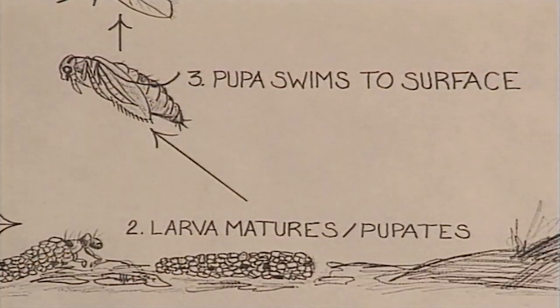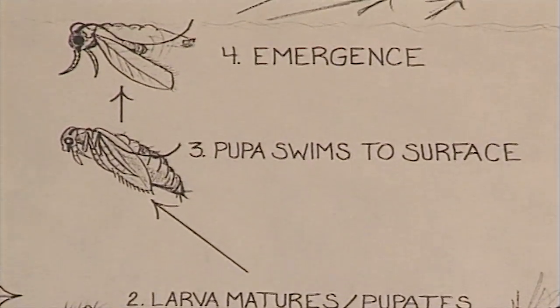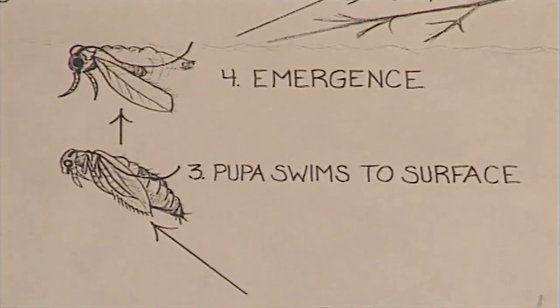When Mother Nature tells that nymph or larva it's time to become an adult, it either crawls or swims to the surface. We call this stage an emergent stage, or in complete life cycles we call that a pupa. This can also be very important to the fish because they're swimming to the surface, sometimes attaching themselves to the surface film, struggling to get out of their nymphal shuck.